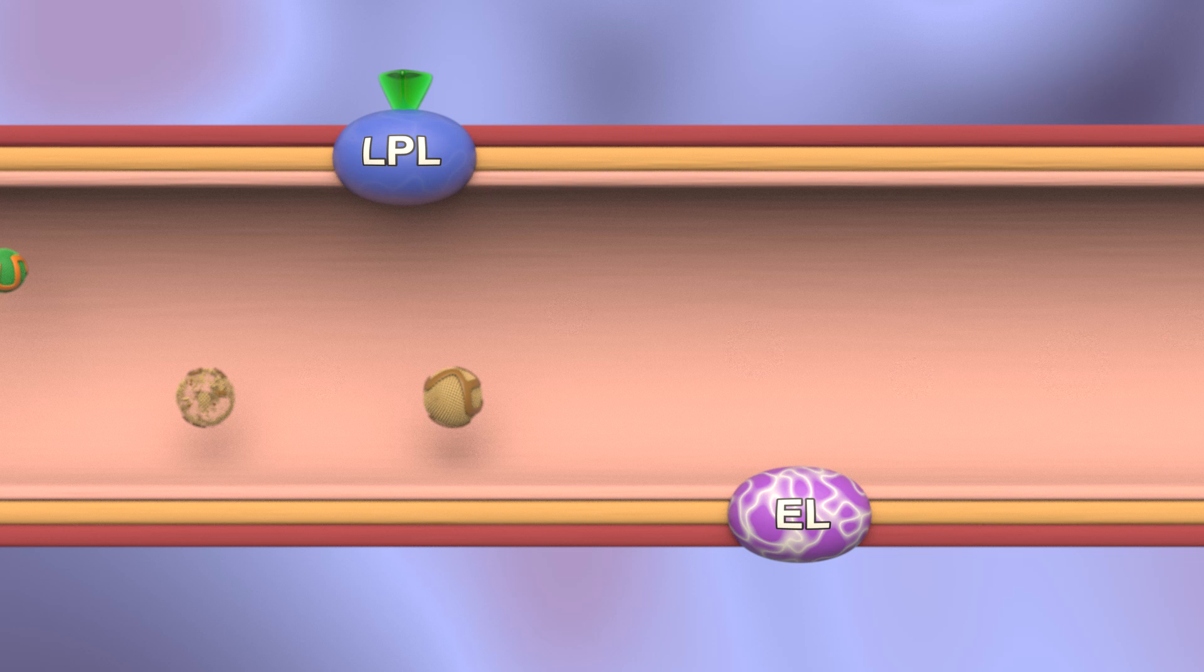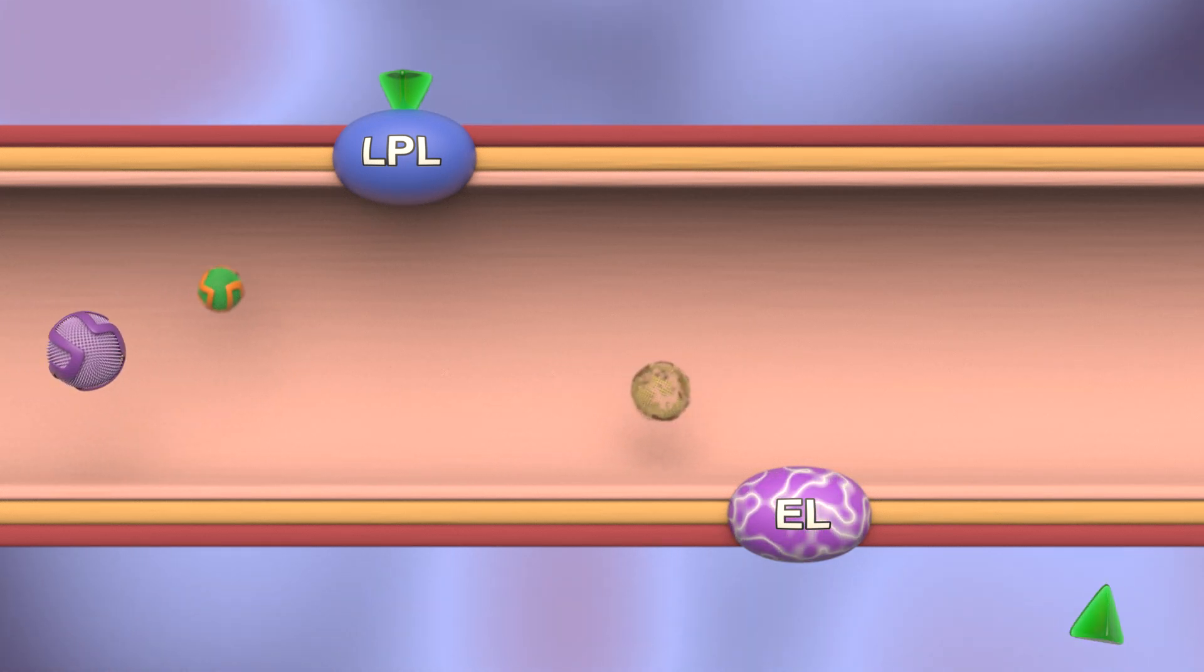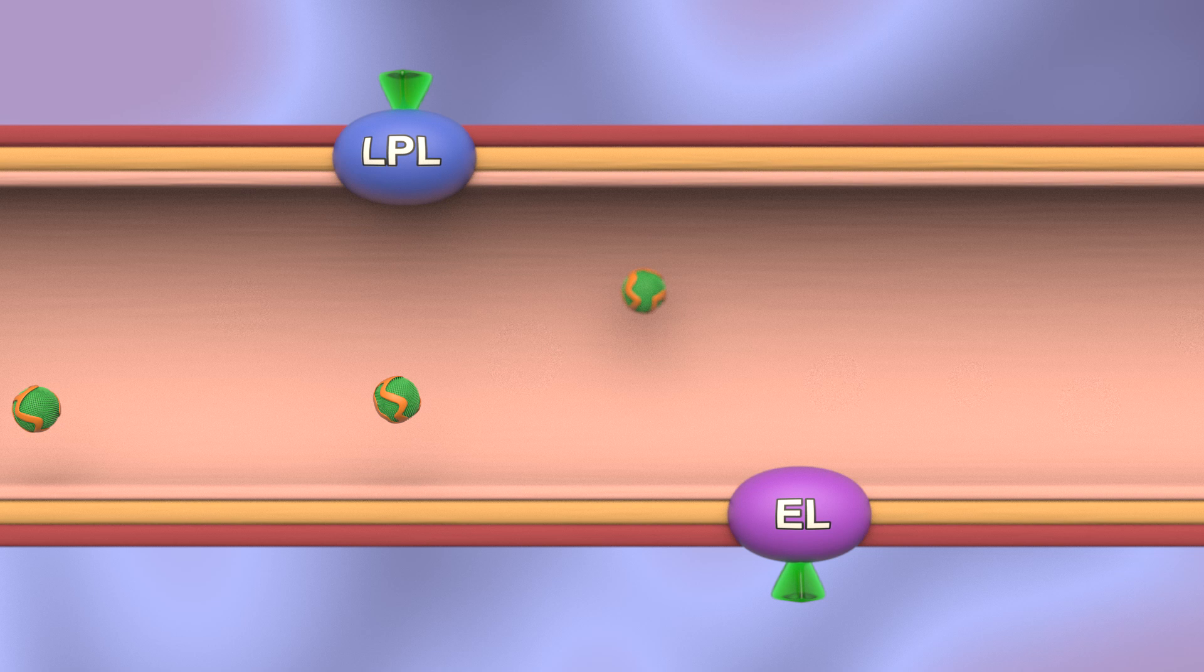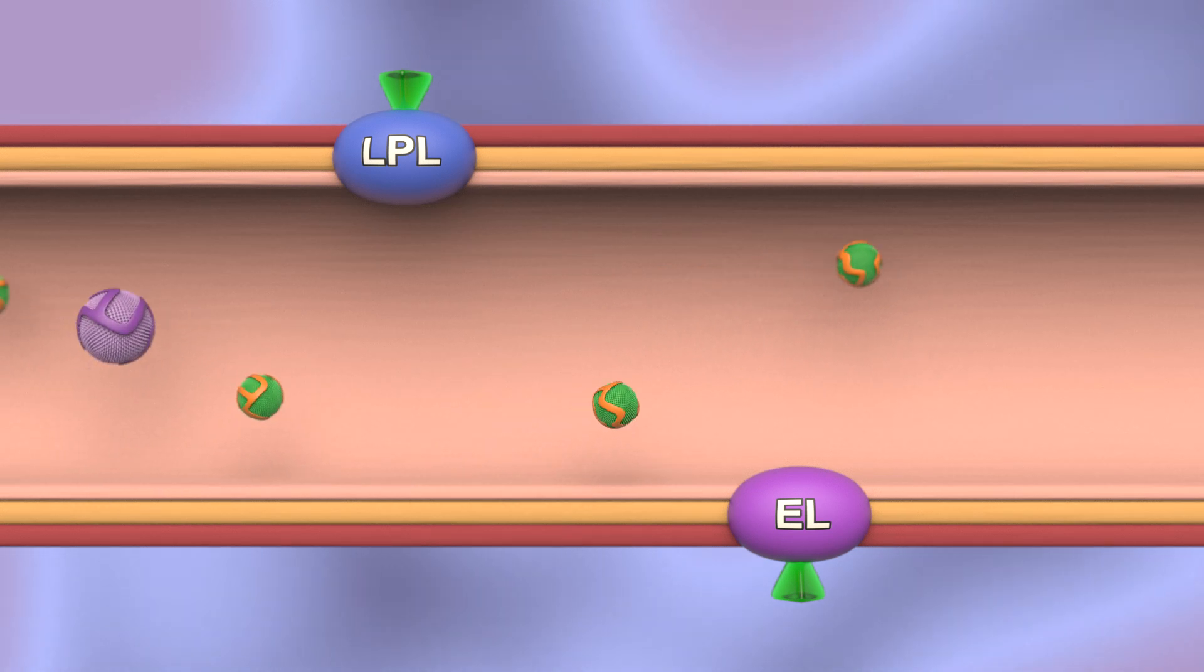Irrespective of the LDL receptor, ANGPTL3 suppresses lipoprotein lipase, or LPL, and endothelial lipase, or EL, which are central mechanisms for clearing triglyceride-rich lipoproteins from the circulation.